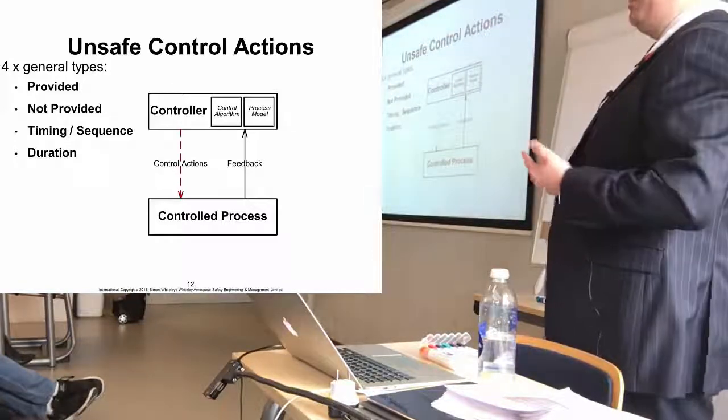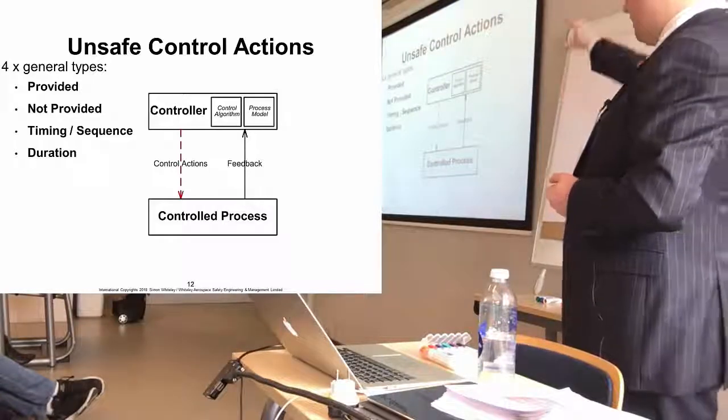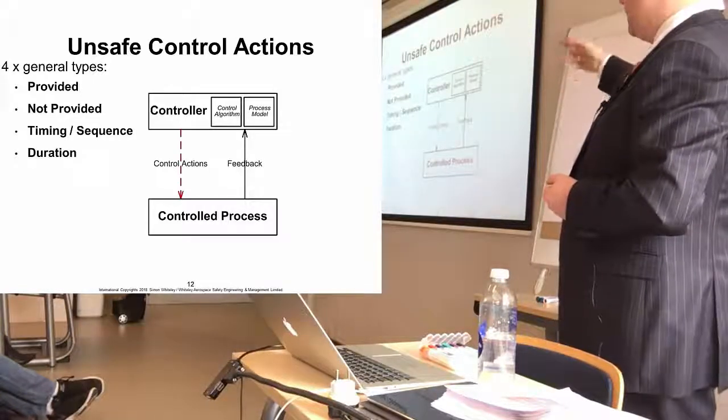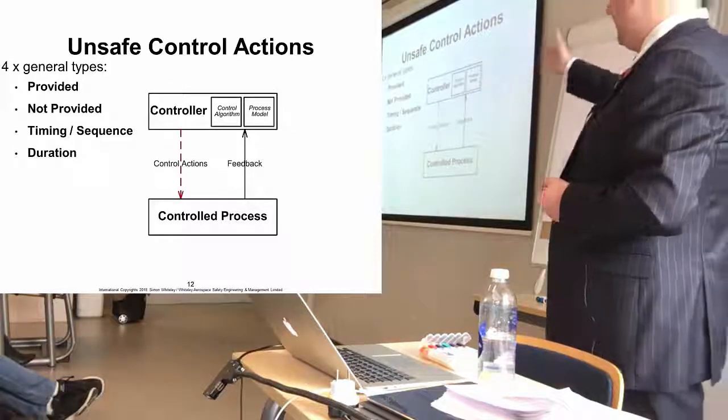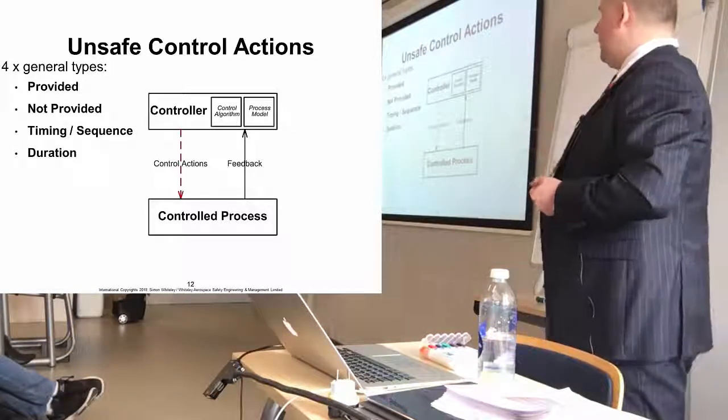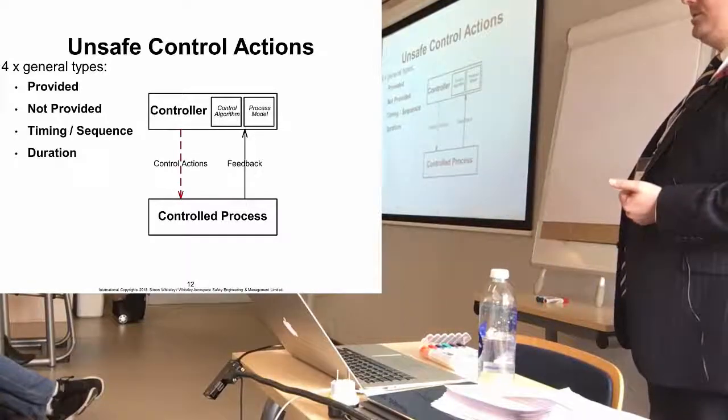When we do the first step of an STPA analysis, we create a control structure made up of these control loops. And then the first thing we do is analyze these control actions and basically think about if that control action is provided under a certain circumstance, is that an unsafe control action?